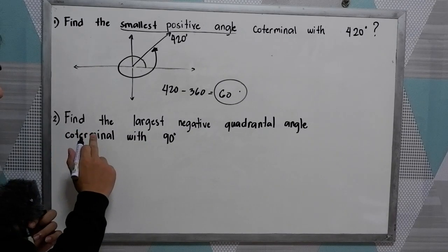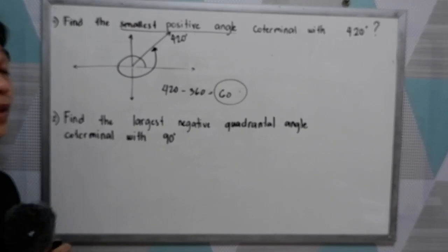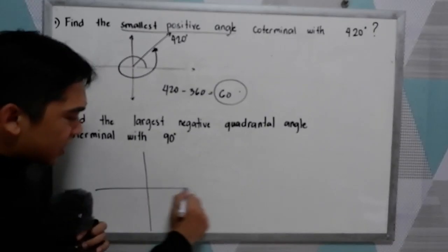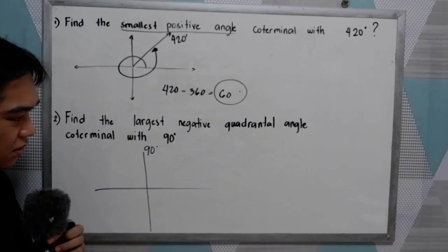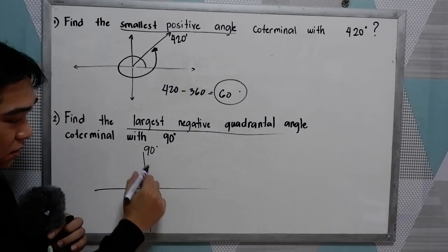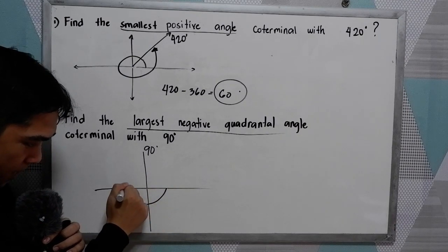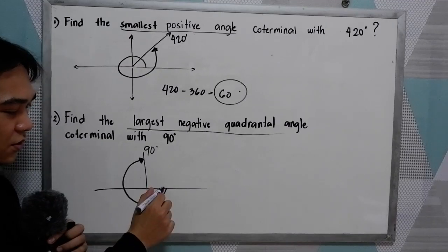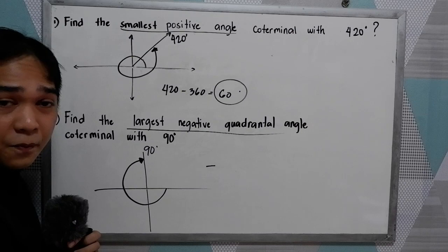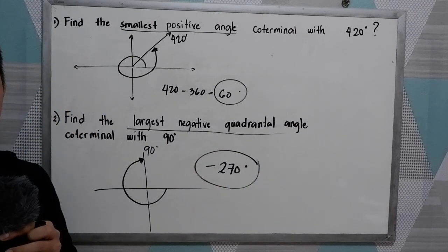Number 2: find the largest negative quadrantal angle coterminal with 90. So 90 is located here. For the largest negative quadrantal angle, we go clockwise. That is negative 270 degrees. Why negative 270? Because this will be our initial side. Going clockwise: negative 90, negative 180, negative 270 — that would be the coterminal of positive 90 degrees.